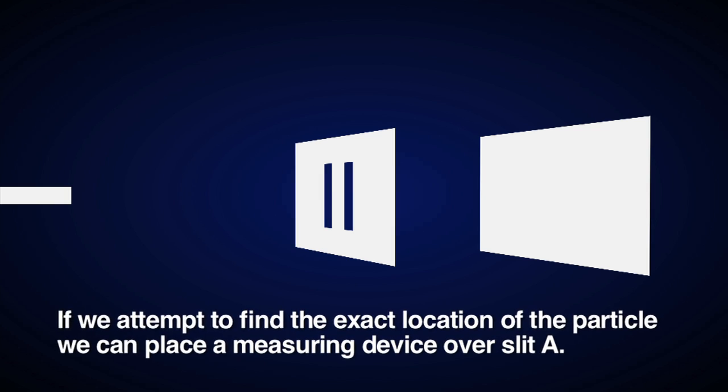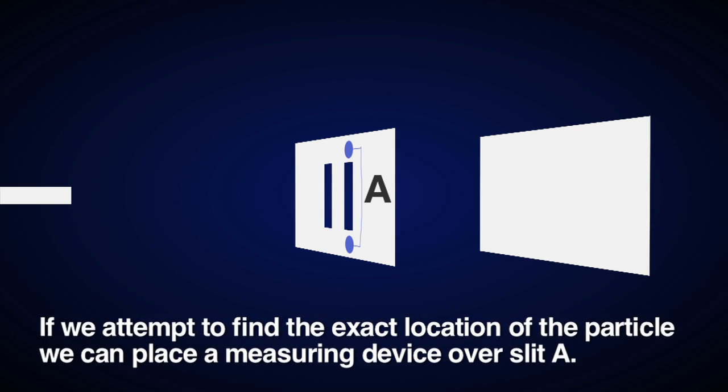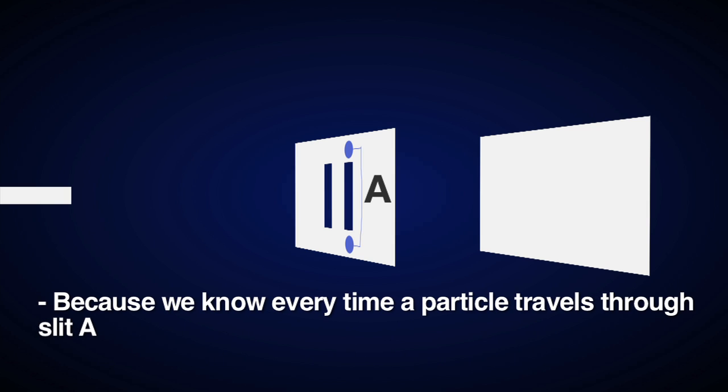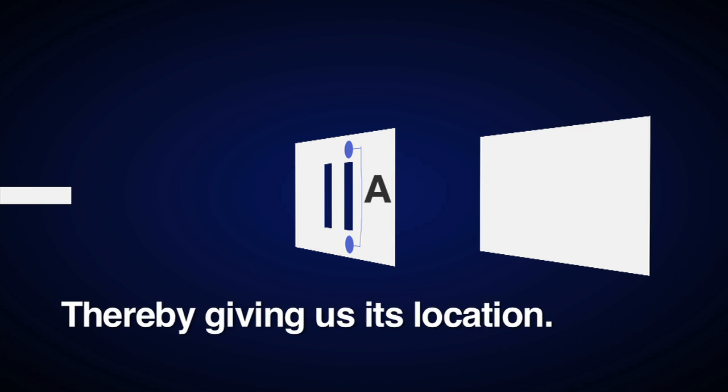However, if we attempt to find the exact location of the particle, we can place a measuring device over slit A. And now, because we know every time a particle travels through slit A, we'll know the exact time it goes through slit A, thereby giving us its location.